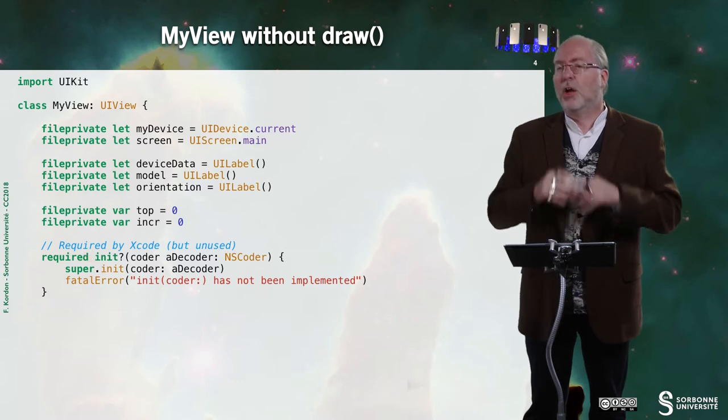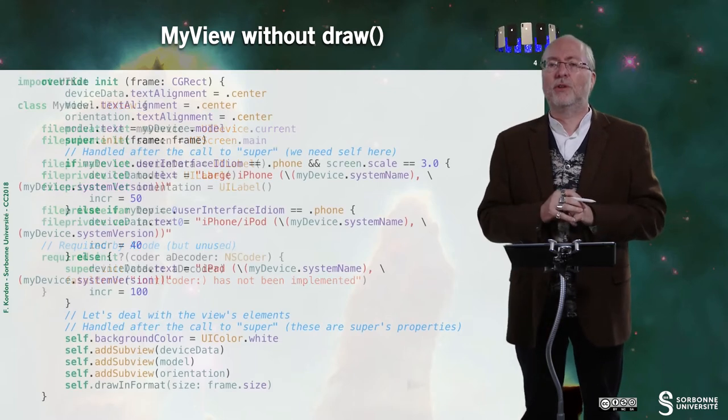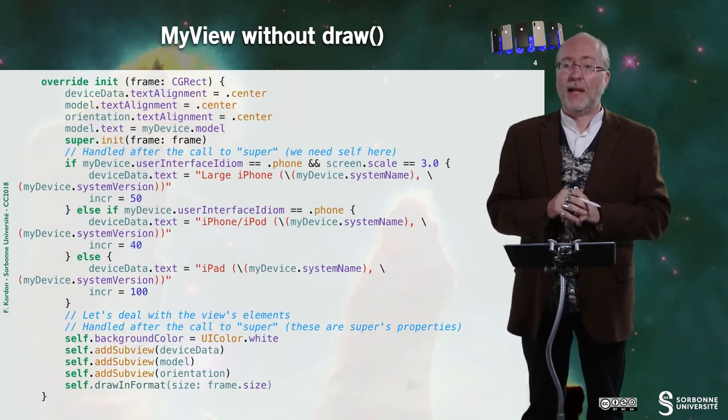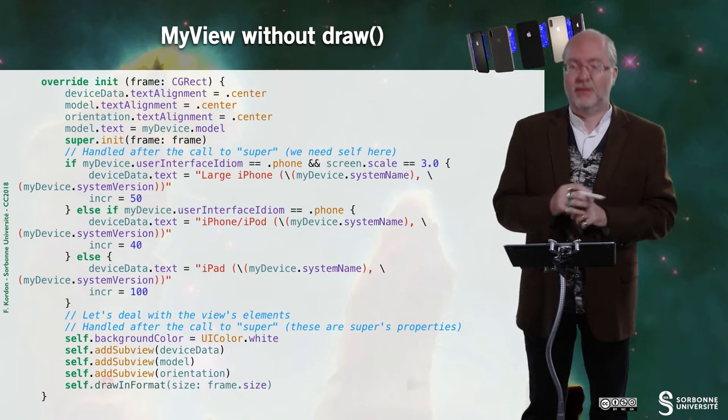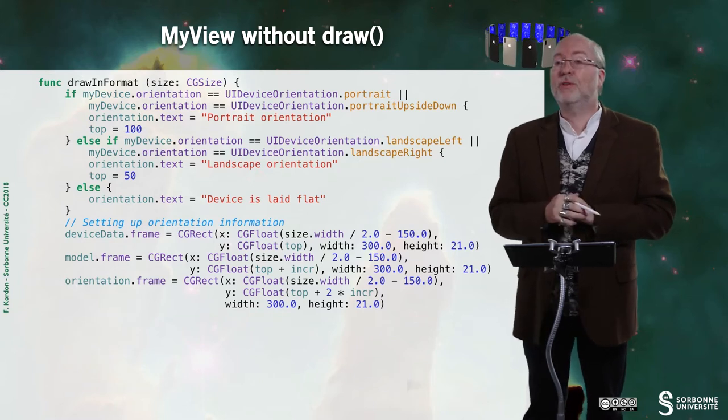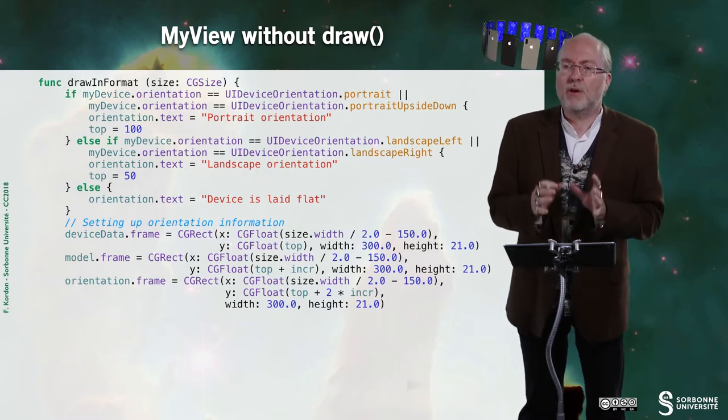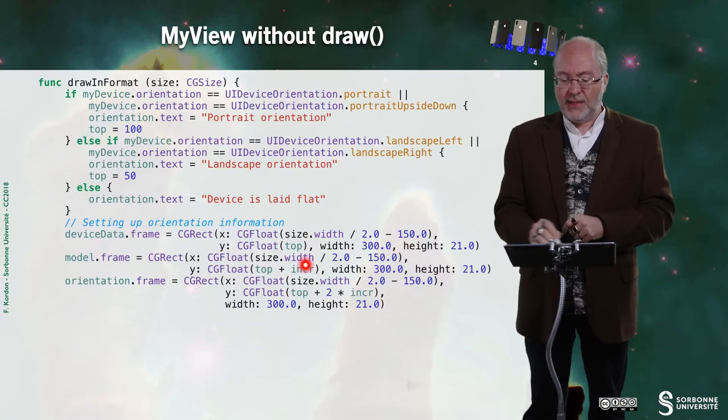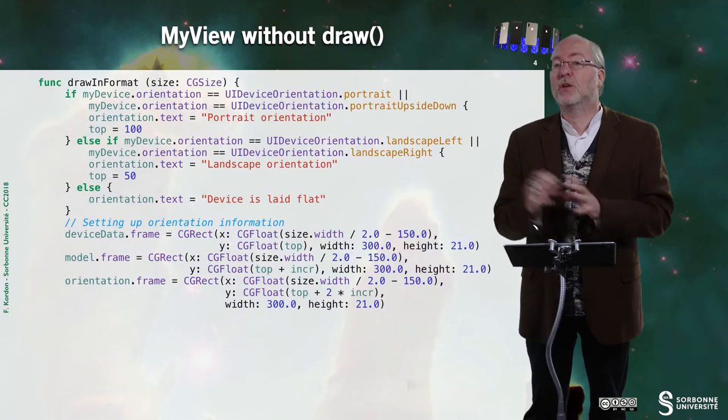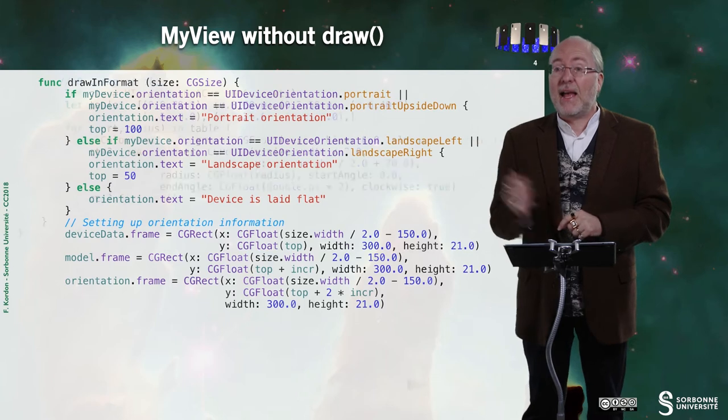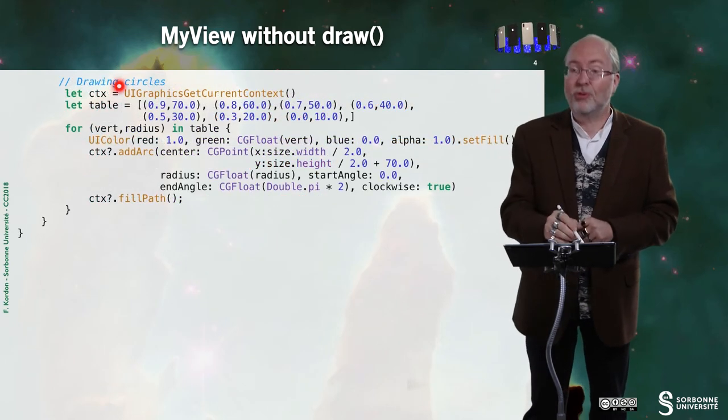This is the unused init with coder. And here, I do the init. And here, I do the drawing format. And in the drawing format, I set up the labels. I update the orientation. I set up the frames of the various labels. And I draw circles.